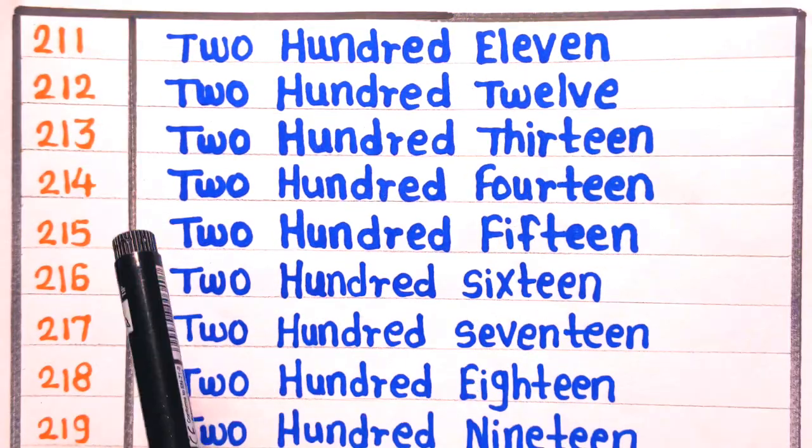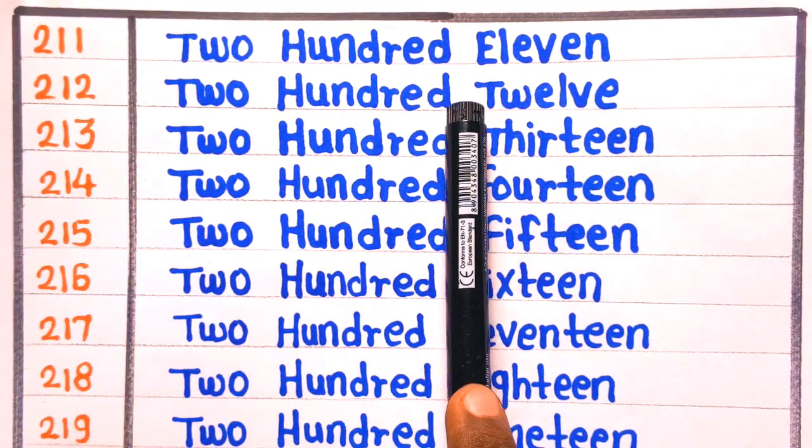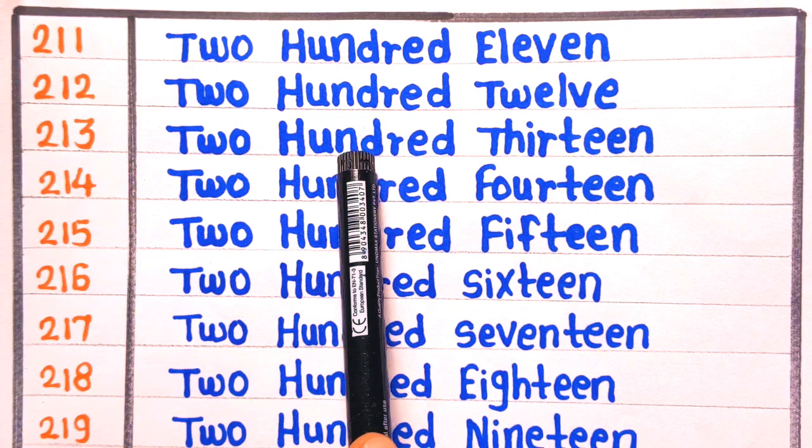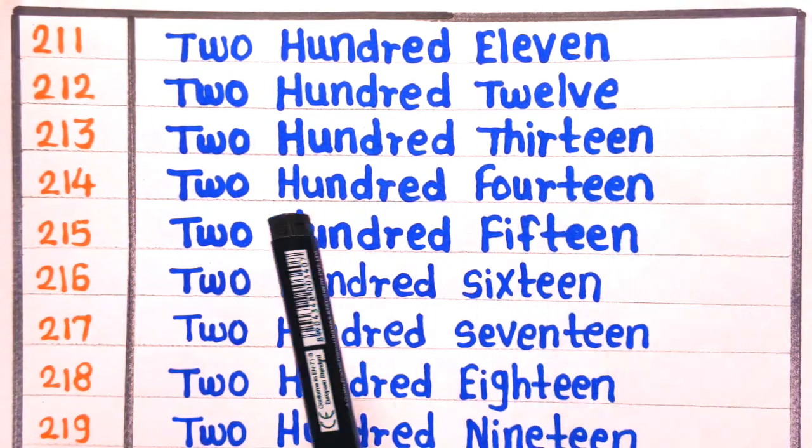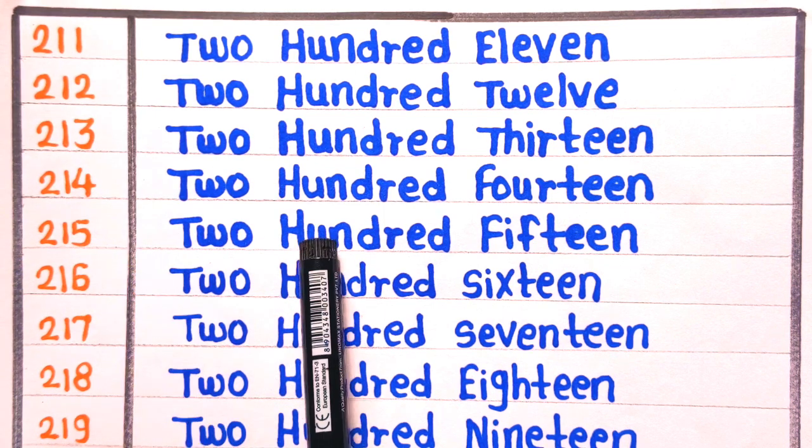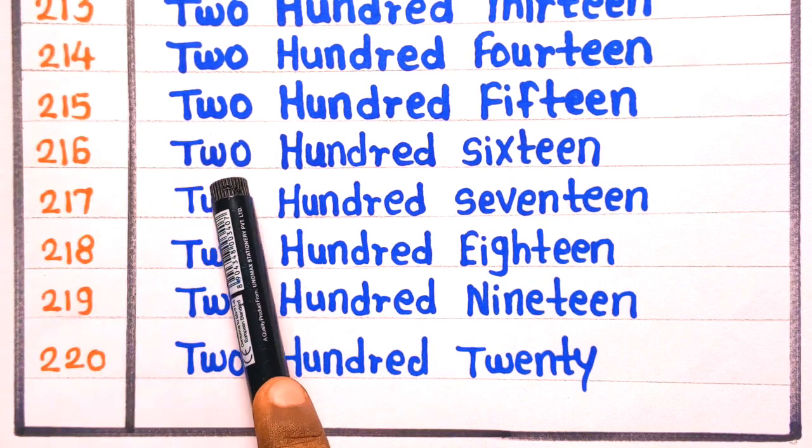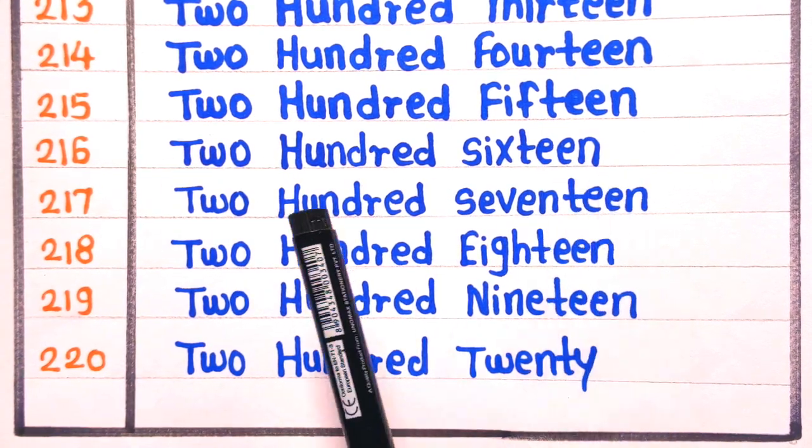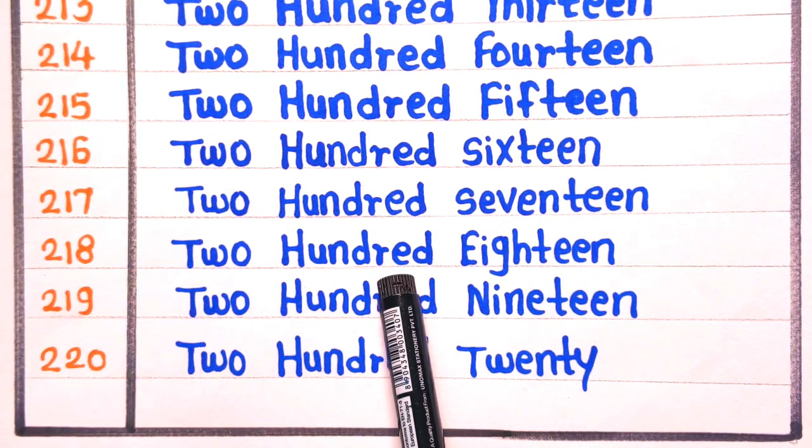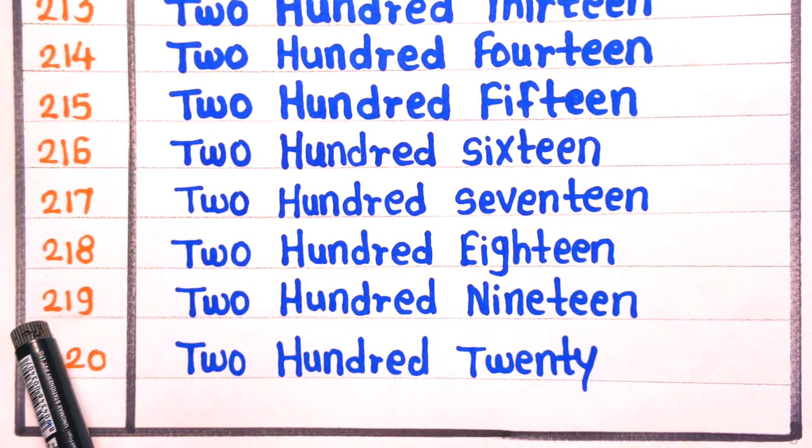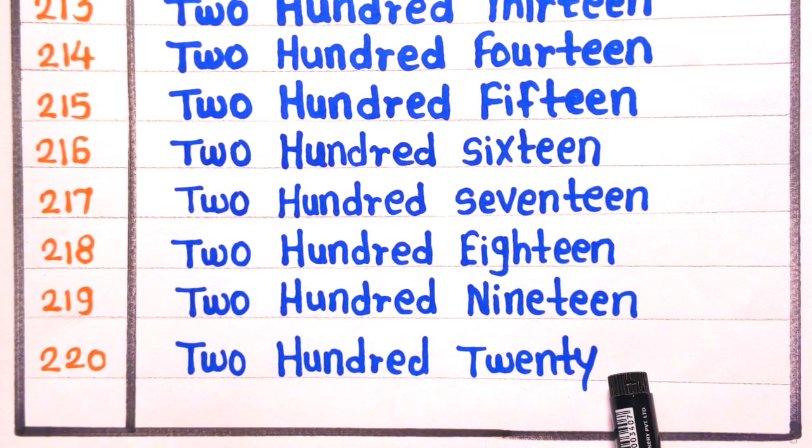Now let's revise with me. 211 is two hundred eleven. 212 is two hundred twelve. 213 is two hundred thirteen. 214 is two hundred fourteen. 215 is two hundred fifteen. 216 is two hundred sixteen. 217 is two hundred seventeen. 218 is two hundred eighteen. 219 is two hundred nineteen. And 220 is two hundred twenty.